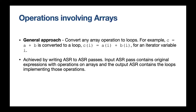A good part about Fortran is that it supports operations over arrays — you can do C equals A plus B where all of these are arrays. We deal with this by converting these operations into loops internally using ASR to ASR passes. So C = A + B becomes a loop containing C(I) = A(I) + B(I) for an iteration variable I. It is one of the simplest and quickest approaches to implement operations involving arrays.